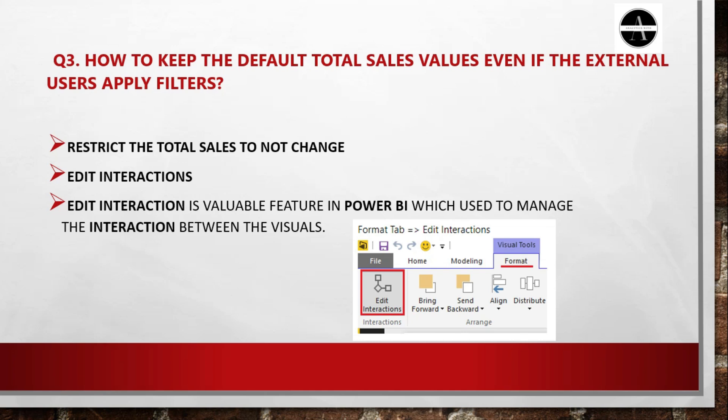The third question is again a scenario-based question. A report has a card with total sales, and they ask how to keep a default total sales value even if an external user applies a filter. Even if an external user uses a slicer, the total value in the card should not change. So we need to restrict total sales from changing, and for this we are going to use Edit Interactions. Edit Interactions is a valuable feature in Power BI used to manage the interaction between visuals. You can find it under the Format menu.